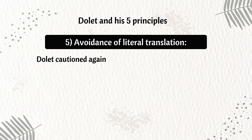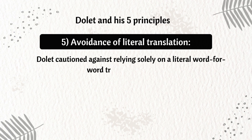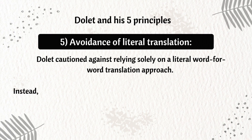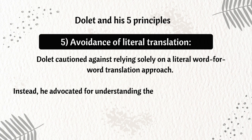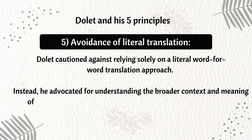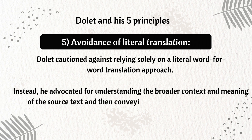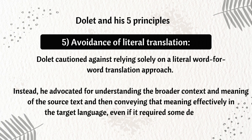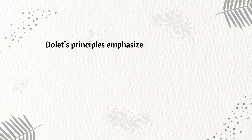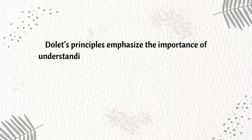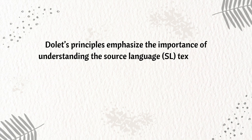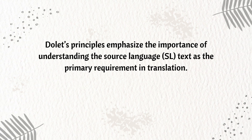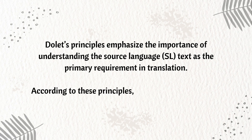Principle 5: Avoidance of Literal Translation. Dolet cautioned against relying solely on a literal word-for-word translation approach. Instead, he advocated for understanding the broader context and meaning of the source text and then conveying that meaning effectively in the target language, even if it required some departure from the literal wording. Dolet's principles emphasized the importance of understanding the source language (SL) text as the primary requirement in translation. According to these principles, a translator is more than just a competent linguist.